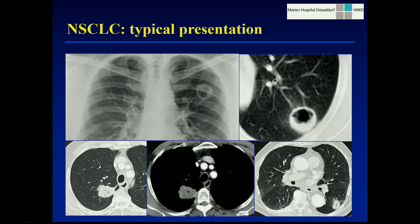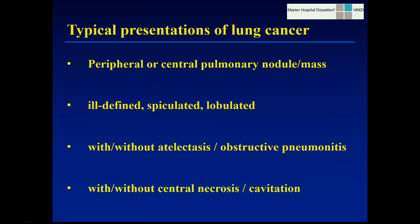Less common but still quite typical is central necrosis. In some tumors, you may just be able to discern lower density of the necrotic part in the center compared to increased density in contrast-enhanced scans in the viable part of the tumor. Sometimes there may be little areas of air in the tumor, and sometimes they are larger, reflecting the fact that the necrosis has got access to the bronchial tree. This is most commonly found in squamous cell carcinoma but also present in other entities of non-small cell lung cancer. To summarize the typical findings: a peripheral or central located nodular mass, usually ill-defined, spiculated, and lobulated, possibly associated with atelectasis or obstructive pneumonitis, and may or may not have central necrosis without cavitation.